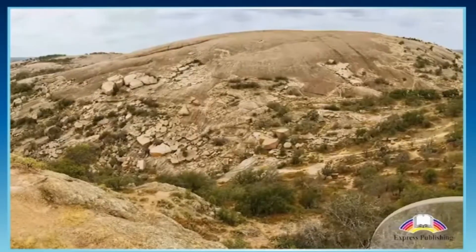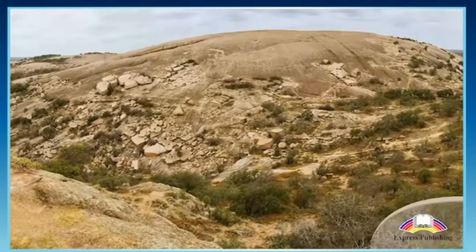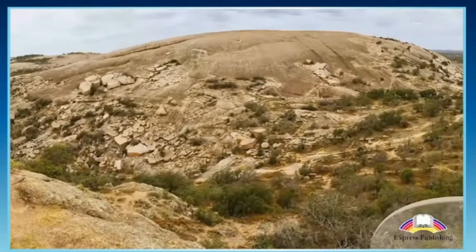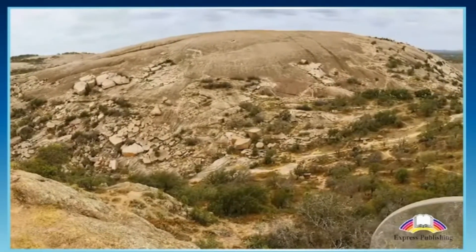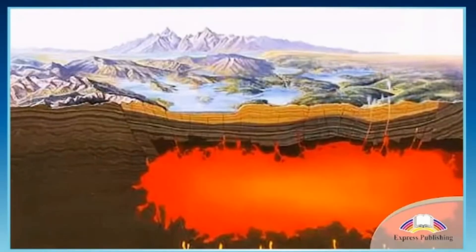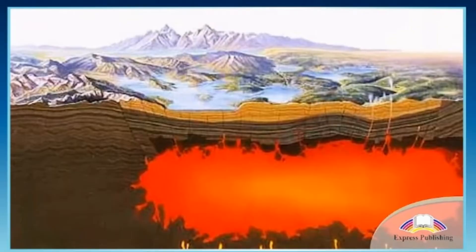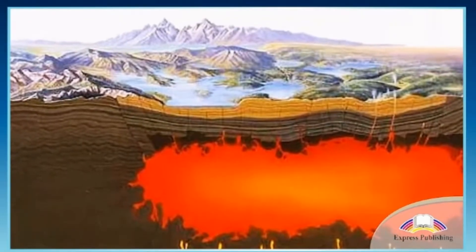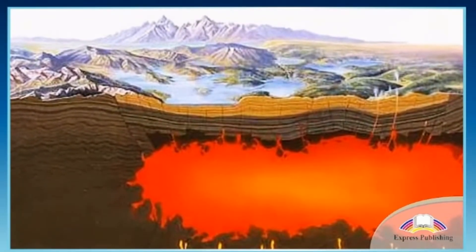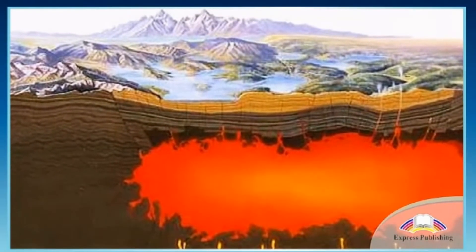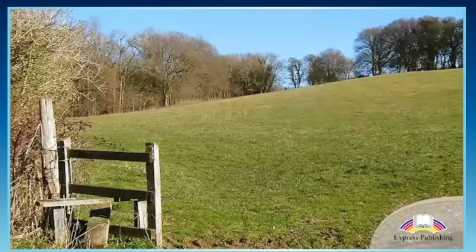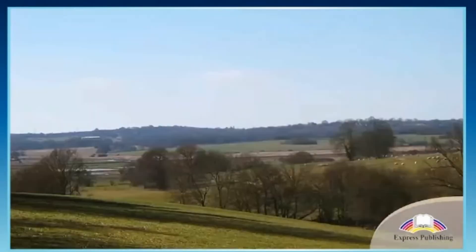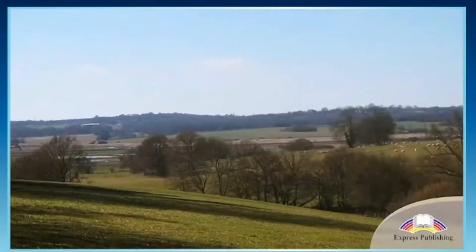Finally, dome mountains get their name because they look like a dome or the top half of a ball. They are formed when hot melted rock from under the Earth's surface pushes up against the Earth's crust without breaking it. The Weald in the southeast of England was formed in this way.